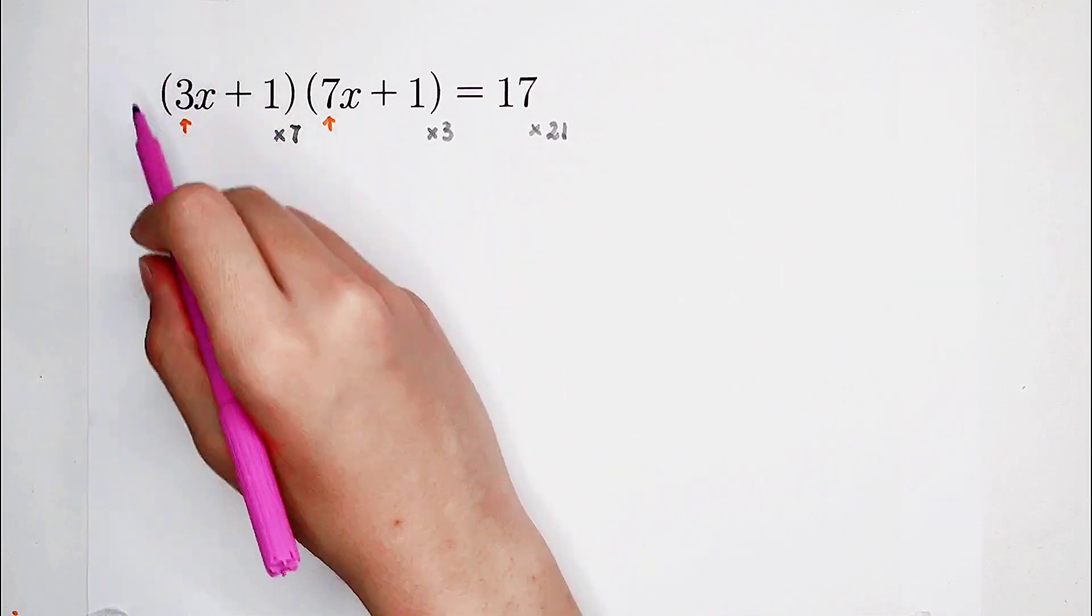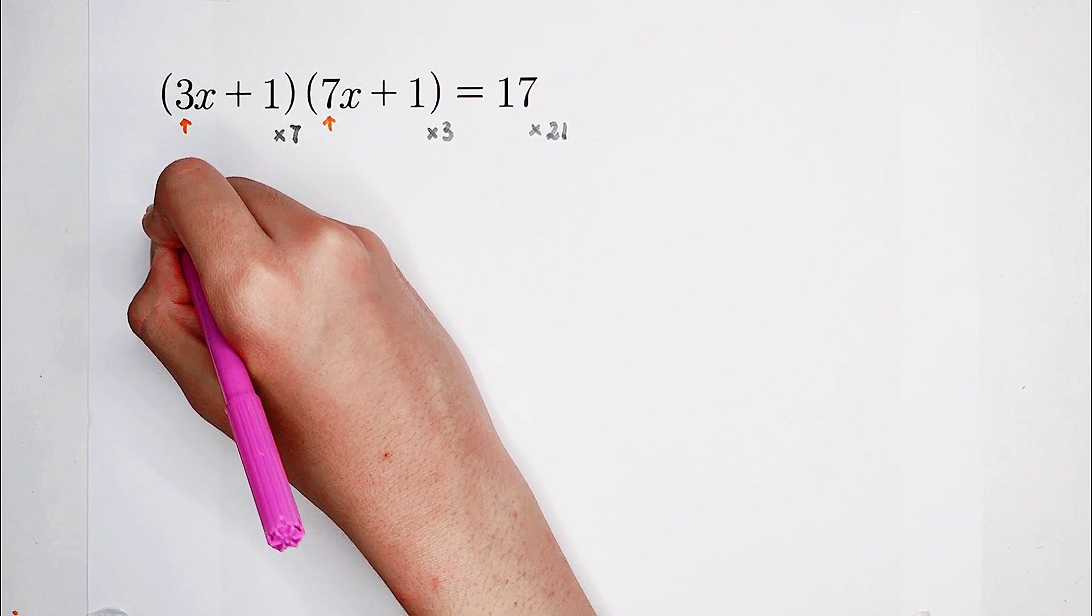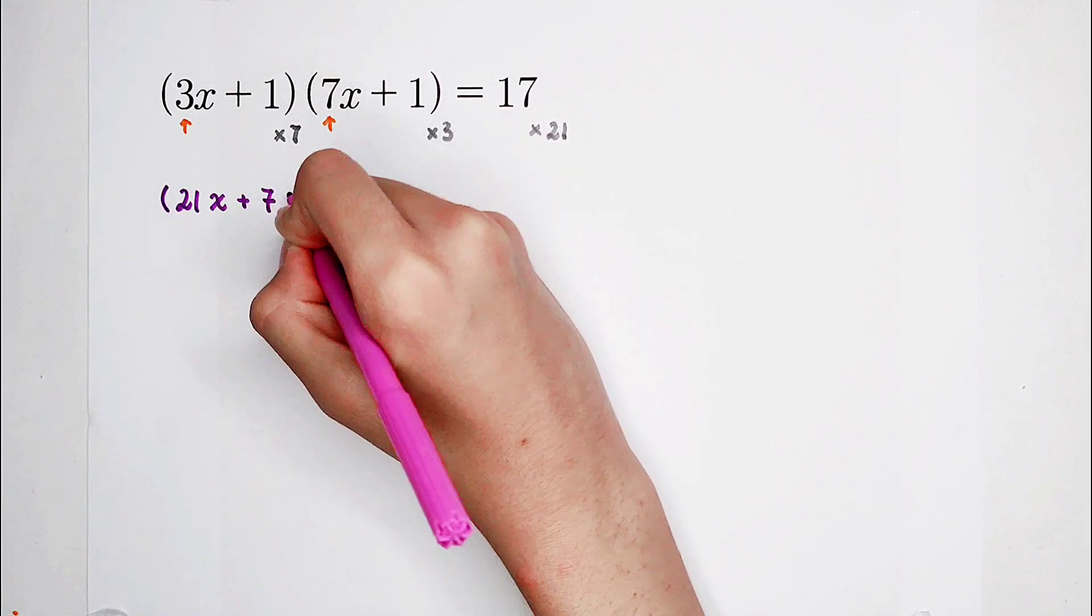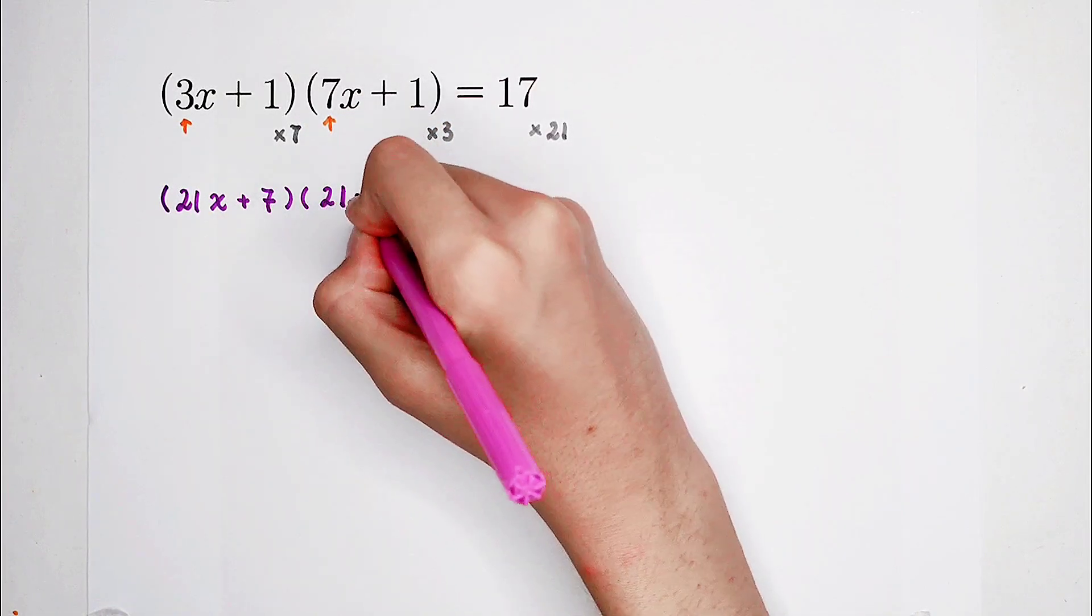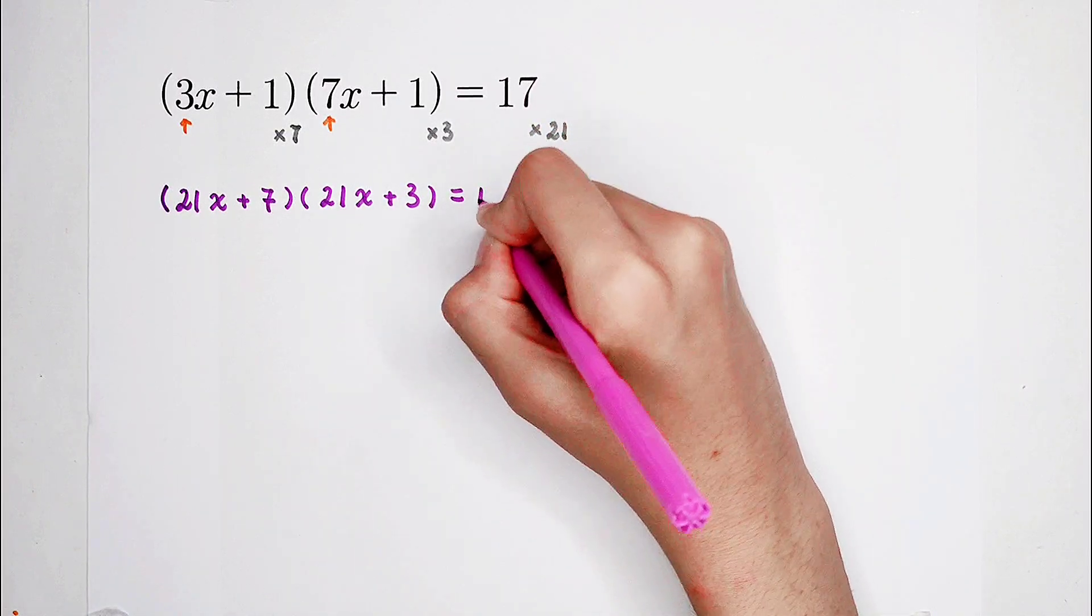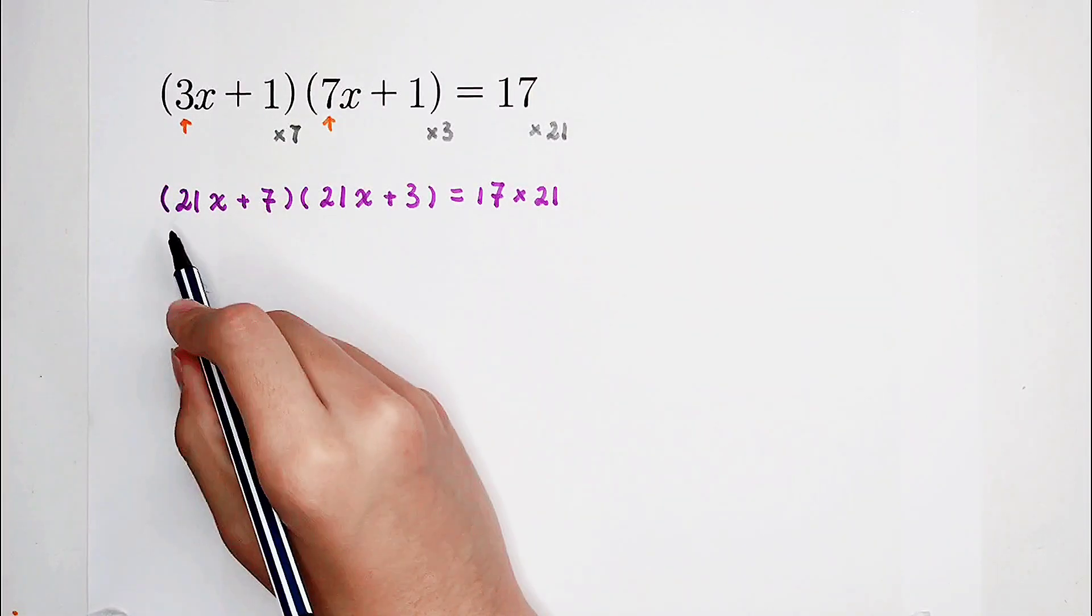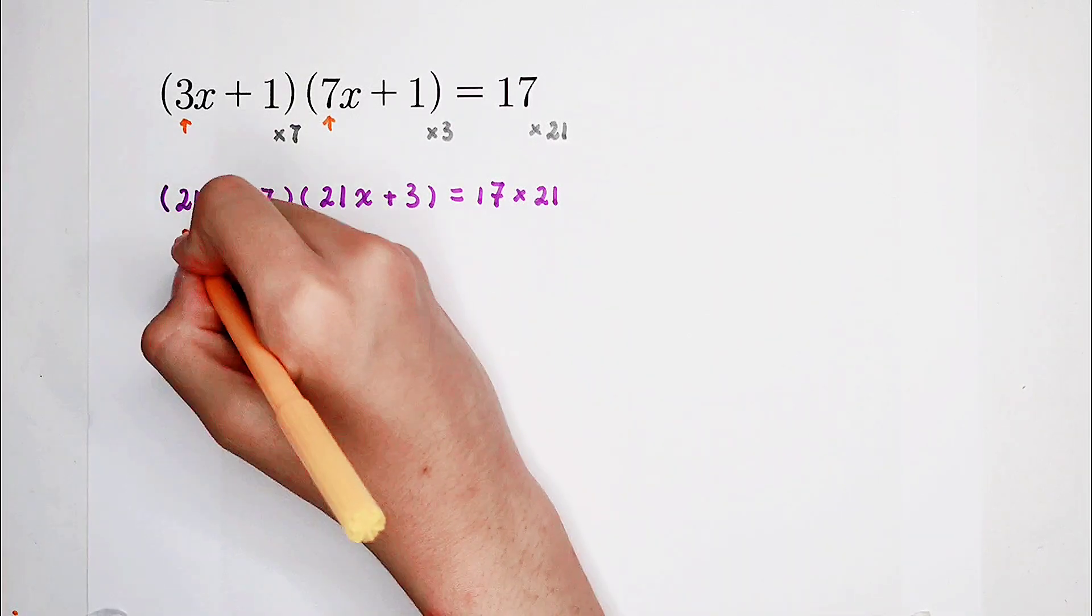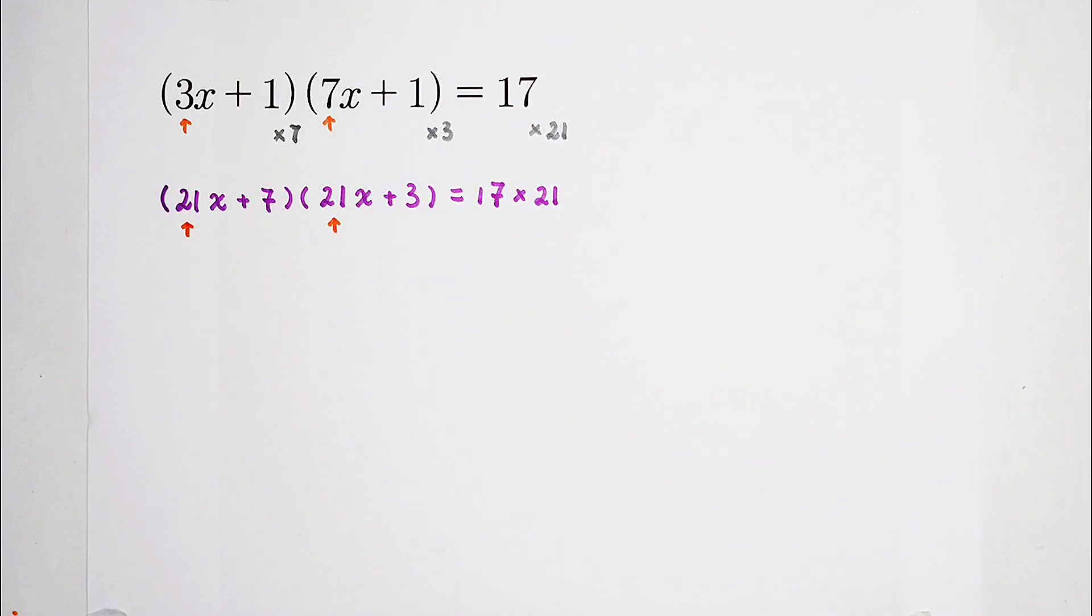3x plus 1 times 7 in the bracket is going to be 21x plus 7. Here, 3 times 7x plus 1 is 21x plus 3, equals 17 times 21. 21x plus 7, 21x plus 3. Our goal has been reached. The coefficients are the same.